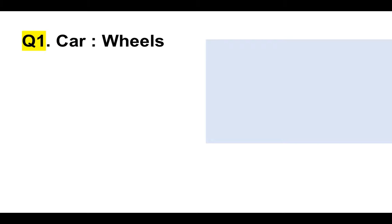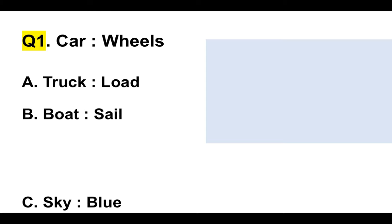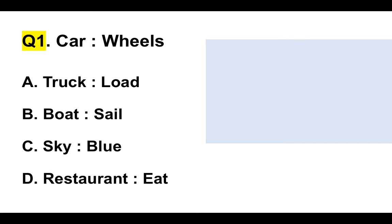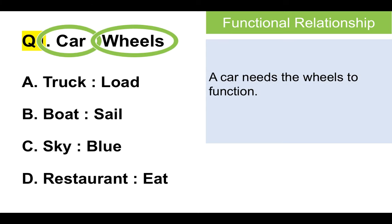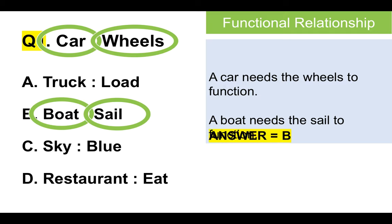Let's have a look at question one. We're presented with two words: car and wheels. Then we're given multiple choice options — usually four of them. A is truck and load, B is boat and sail, C is sky and blue, and D is restaurant and eat. If we look at the relationship between car and wheels, we can see it's a functional relationship — the car cannot function without the wheels. A truck can function without a load, sky can function without being blue, and a restaurant can function without people eating. So the answer is boat and sail, because a boat needs the sail in order to function. The correct answer is B.